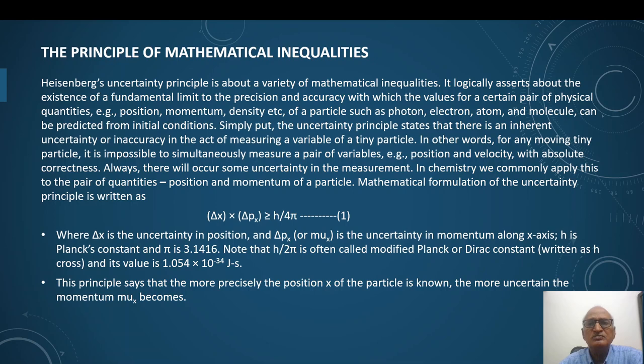In other words, for any moving tiny particle it is impossible to simultaneously measure a pair of variables like position and velocity with absolute correctness. Always there will occur some uncertainty in the measurement. In chemistry we commonly apply this to the pair of quantities like position and momentum of a particle.